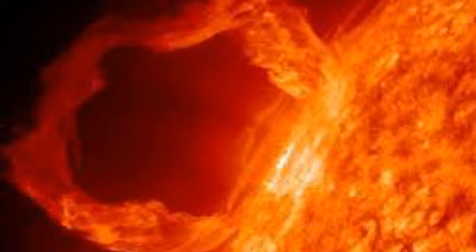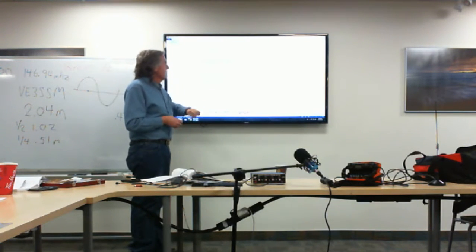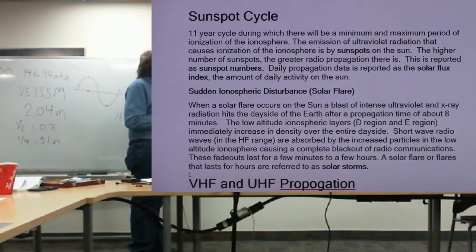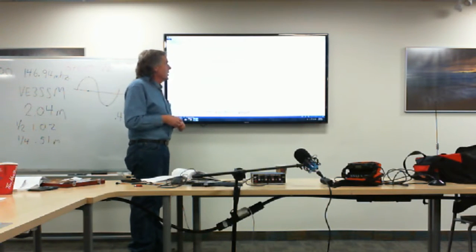Solar flares are also the cause of the northern lights, or aurora. If there's been a solar flare it's bad news for HF radio, but if you're on two meters or six meters and point your antenna north a few hours after the solar flare, you might have a lot of fun working stations off the northern lights. The sunspot cycle you need to know is 11 years — an 11-year cycle with a minimum and maximum period of ionization of the ionosphere. Ultraviolet radiation emissions from sunspots cause ionization of the ionosphere.